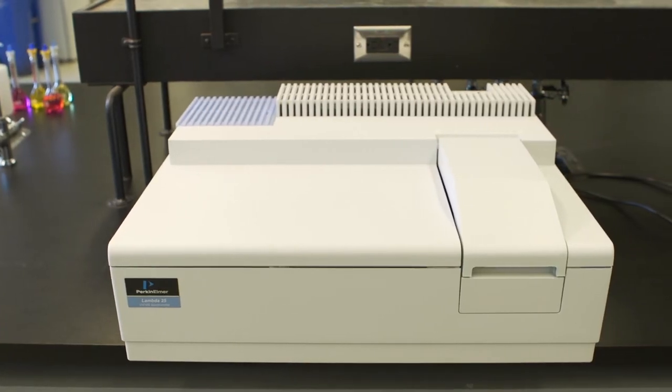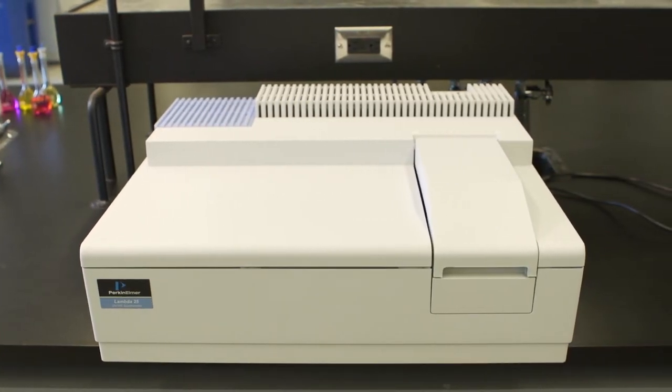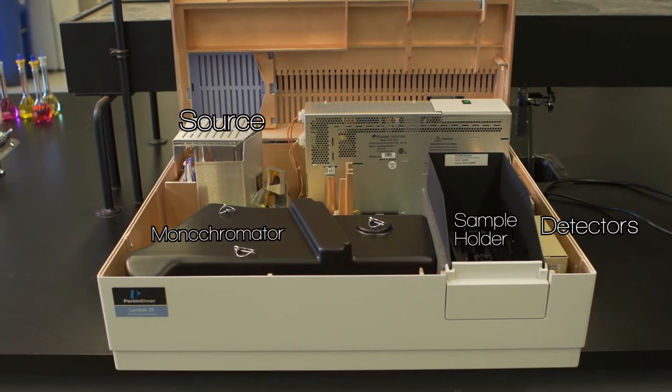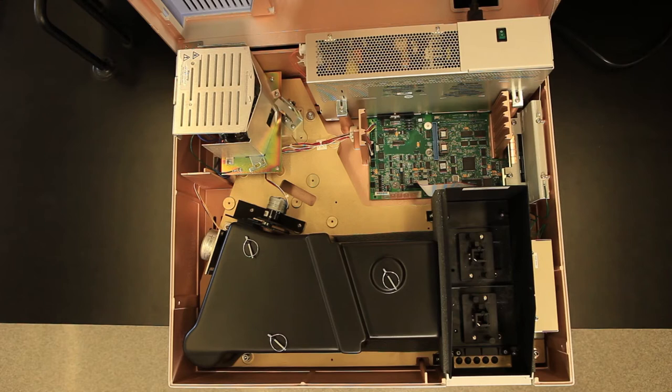We'll first look at the various components of the Lambda-25 spectrophotometer. This is what the instrument looks like when the cover is taken off. We'll start off looking at the light source.